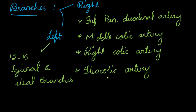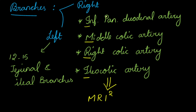Remembering the branches of the major arteries is important from an MCQ point of view. You can remember the right-side branches using the mnemonic 'MRI2': M is for middle colic artery, R is for right colic artery, and both I's stand for inferior pancreaticoduodenal artery and ileocolic artery.